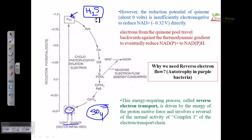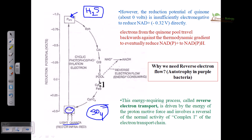We can see electrons transferring from one molecule to another through these electron carrier molecules. Looking at the reduction potential of quinone carefully, we have seen this process in detail — but the key question is: why do we at all need reverse electron flow?